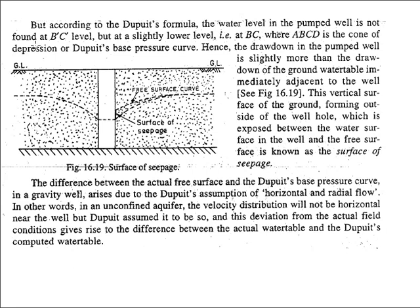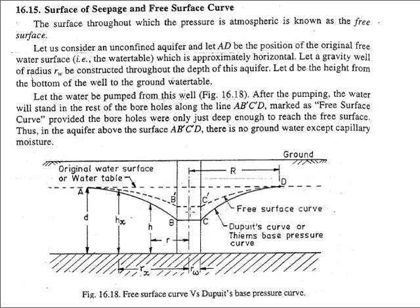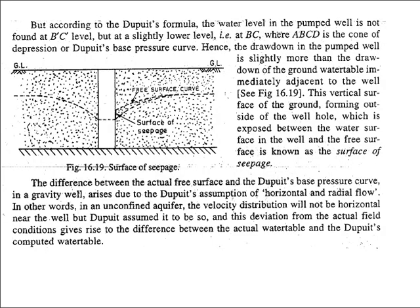There is a discrepancy between the actual free surface and Dupuit's free surface. The reason is that according to Dupuit's formula, the water level in the pumped well is not at B'-C' but at B-C, because he assumed that flow would be radial and horizontal. Since he assumed horizontal and radial flow, the free surface according to him is A-B-C-D, whereas the actual free surface is A-B'-C'-D, creating the discrepancy.